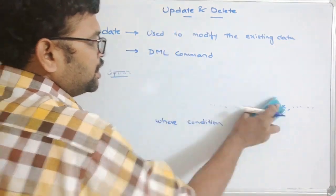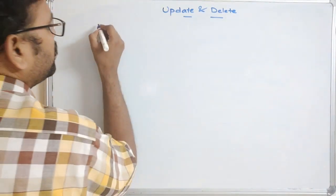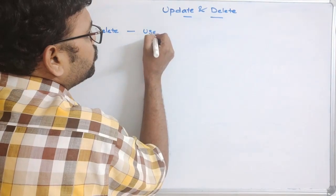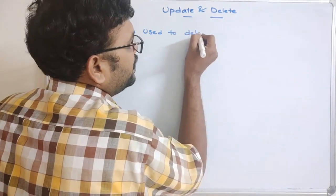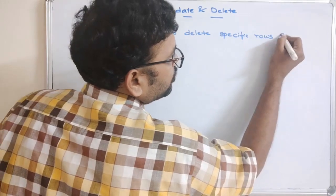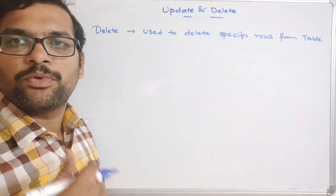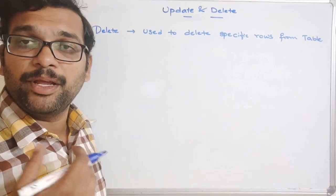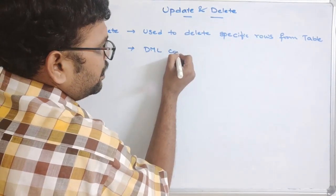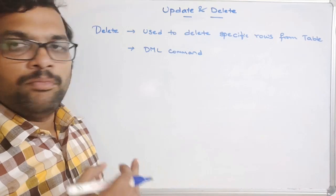Coming to DELETE: DELETE is used to delete specific rows from a table. Based upon a condition, the particular rows will be deleted — either a single row or multiple rows. Similar to UPDATE, DELETE is also a DML command, used to change (i.e., remove) the data. It is completely different from DROP and TRUNCATE.